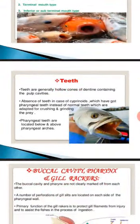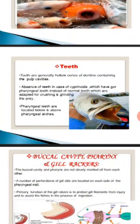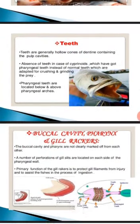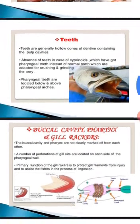The buccal cavity and pharynx are not clearly marked off from each other. A number of perforations called gill slits are located on each side of the pharyngeal wall. The primary function of the gill rakers is to protect the gill filaments from injury and to assist the fish in the process of ingestion. As seen in the diagram, the gill rakers help in the progression of food particles.